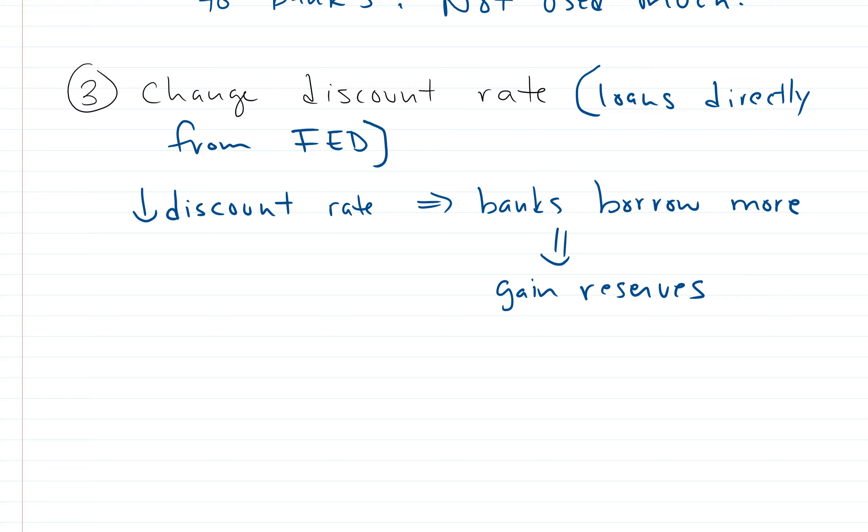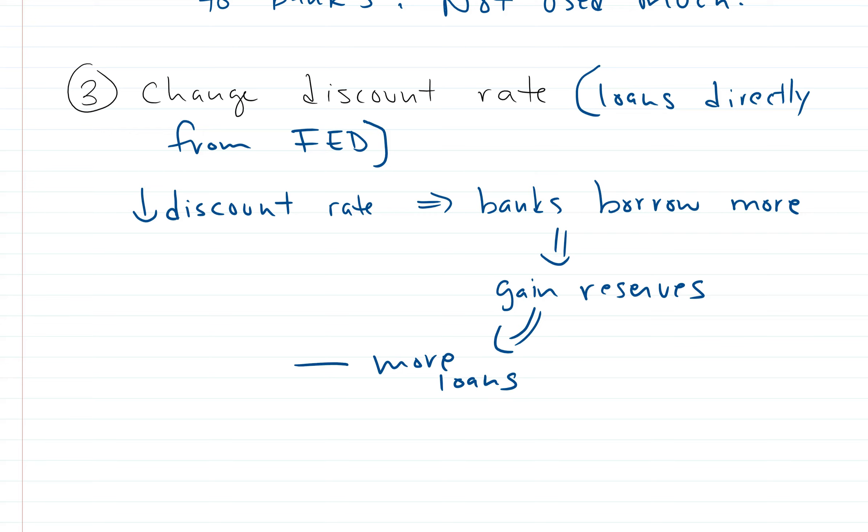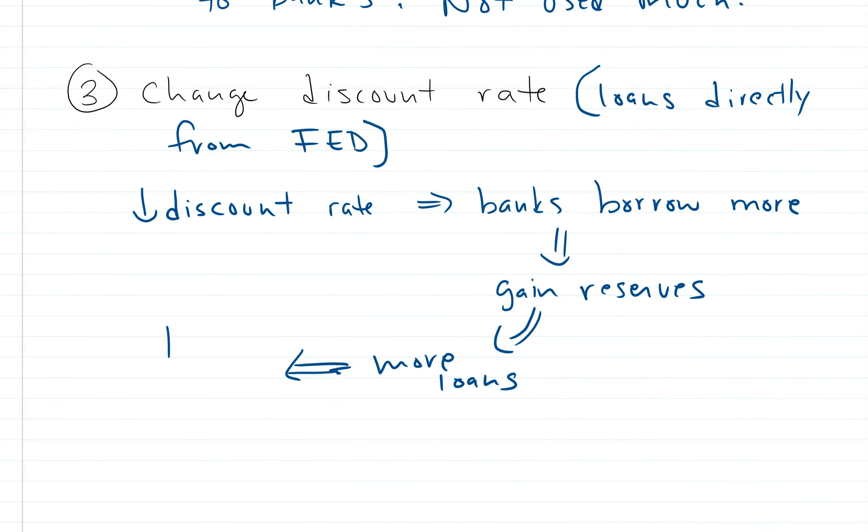They borrow, they gain reserves so they do more loans. When they get more reserves, they do more loans, and then this is going to increase the money supply and decrease the interest.